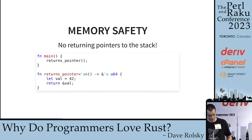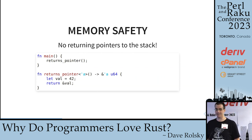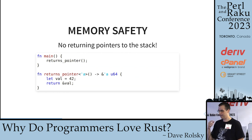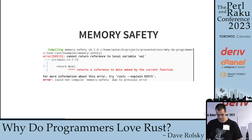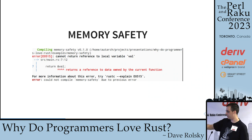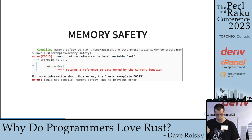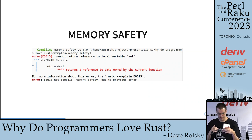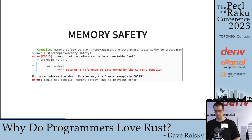So let's take a look at memory safety. One of the things you cannot do in Rust is return pointers to the stack, because that would cause horrible errors. Here's an example: we call a function that allocates a variable inside on the stack and tries to return a pointer to it. The compiler says 'returns a reference to data owned by the current function' and just won't let you do this. The error is highlighted, it shows you exactly where you're doing this and what the variable is.